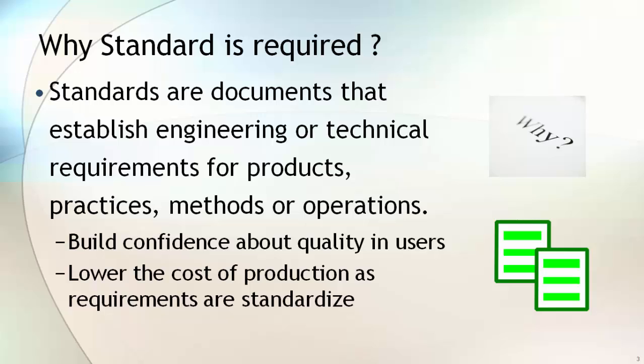In the case of process industry, we want all piping materials, irrespective of their country of origin, to fit perfectly with each other when they arrive on site. Standards help to achieve this by establishing engineering or technical requirements for products, practices, methods, or operations. Standards build confidence about product quality in users.